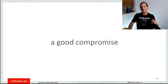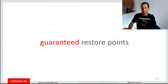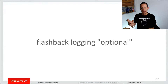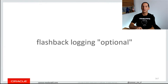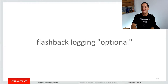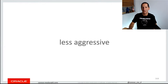A good compromise, rather than turning on flashback across your entire database — which means you can flash back to any point in time ever — is a thing called a guaranteed restore point. Flashback doesn't have to be on at the database level. You can just do CREATE GUARANTEED RESTORE POINT and give it a name. A guaranteed restore point is saying the database will guarantee it can flash back to that specific point — not necessarily any other point from that point onwards, just that point. As a result, it doesn't need to maintain as many flashback logs, so it's a less aggressive resource penalty on your system.